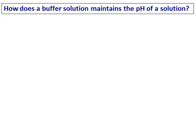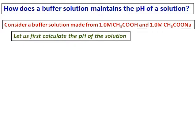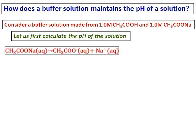Let's find out how a buffer solution maintains the pH of a solution. Consider a buffer solution made from 1 molar acetic acid and 1 molar sodium acetate. In order to know that the pH doesn't change, we have to first calculate the pH of the solution.